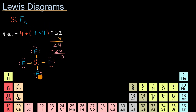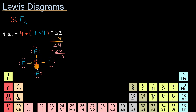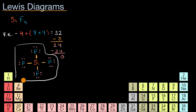We've now used up all of the valence electrons and accounted for all of them in the Lewis diagram. The fluorines are satisfied — they each have six non-bonding electrons plus two shared in a bond, giving them eight valence electrons. The silicon shares in four bonds, each with two electrons, so it also satisfies the octet rule. I would feel very confident that this is the correct Lewis diagram — sometimes called the Lewis structure — for silicon tetrafluoride.